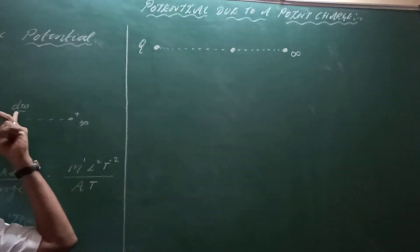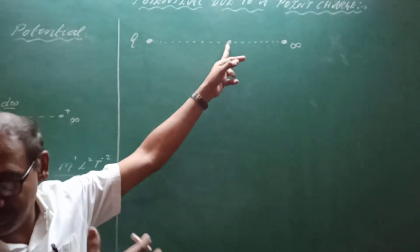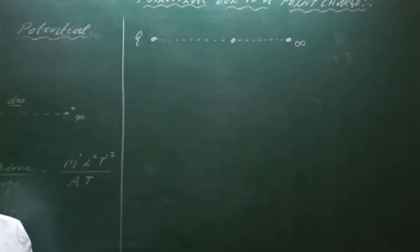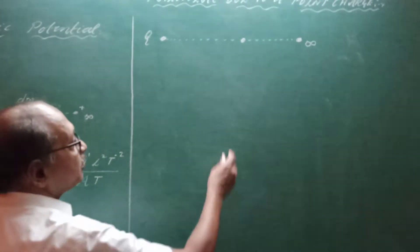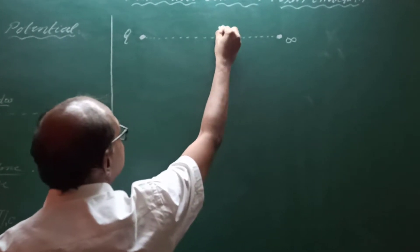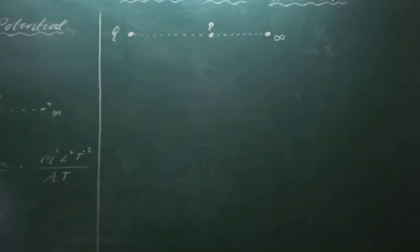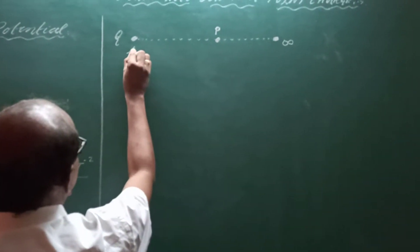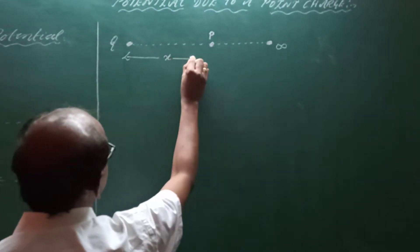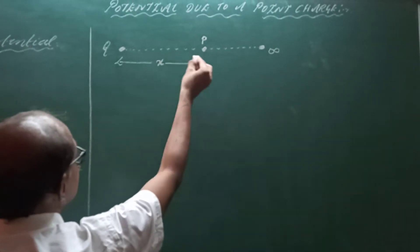There is some kind of work done — the work done in bringing a unit positive charge from infinity to this point in an electric field. We will mention this point as P. The distance from Q to P is considered as x.